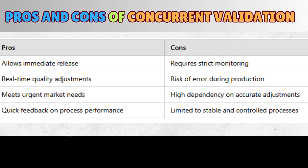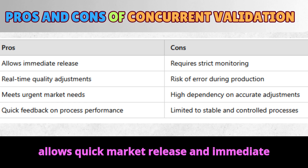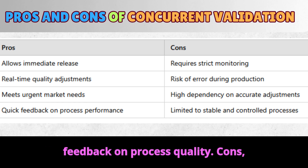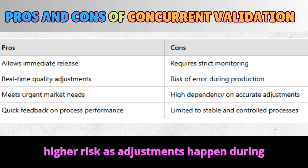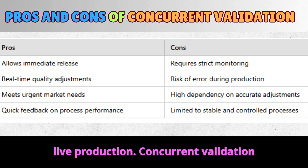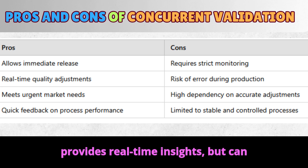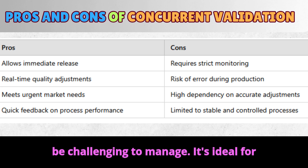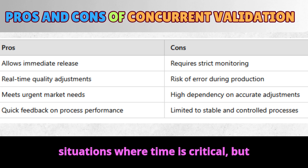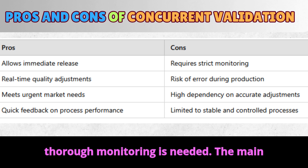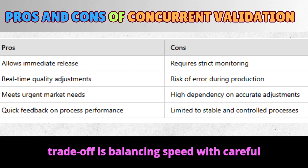Pros and cons of concurrent validation. Pros: allows quick market release and immediate feedback on process quality. Cons: higher risk as adjustments happen during live production. Concurrent validation provides real-time insights but can be challenging to manage. It's ideal for situations where time is critical, but thorough monitoring is needed. The main trade-off is balancing speed with careful quality checks.